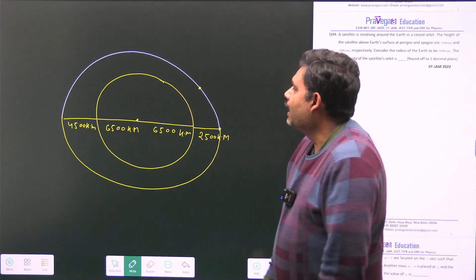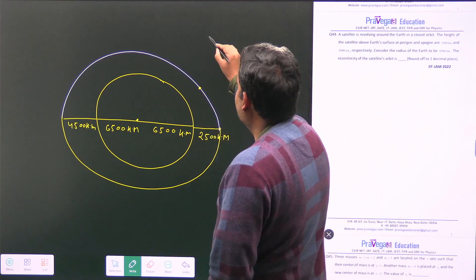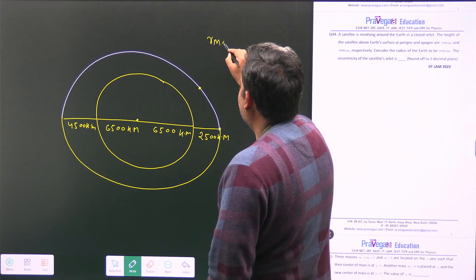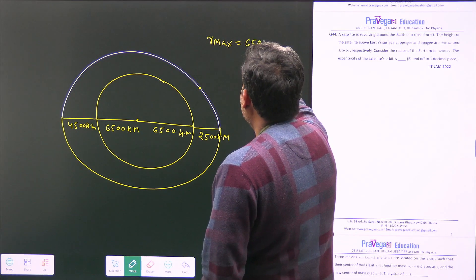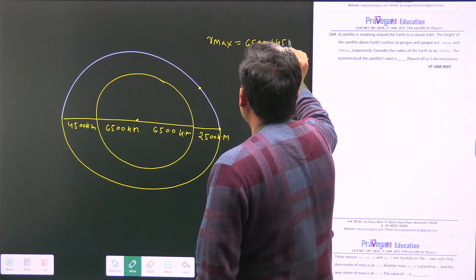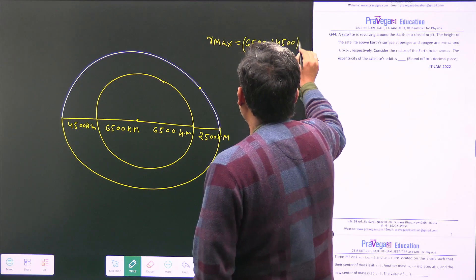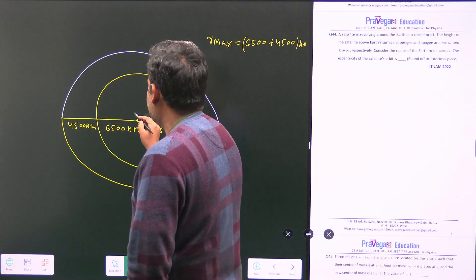So what will be my r maximum? So my r maximum is equal to 6500 plus 4500, obviously in form of kilometer. So this will be my r maximum.